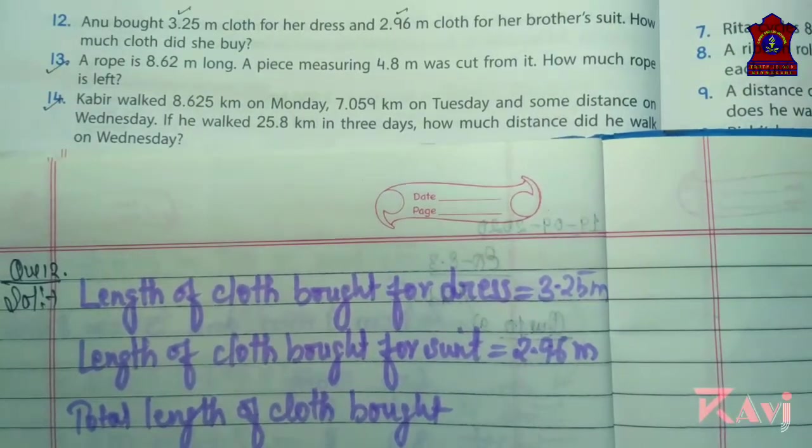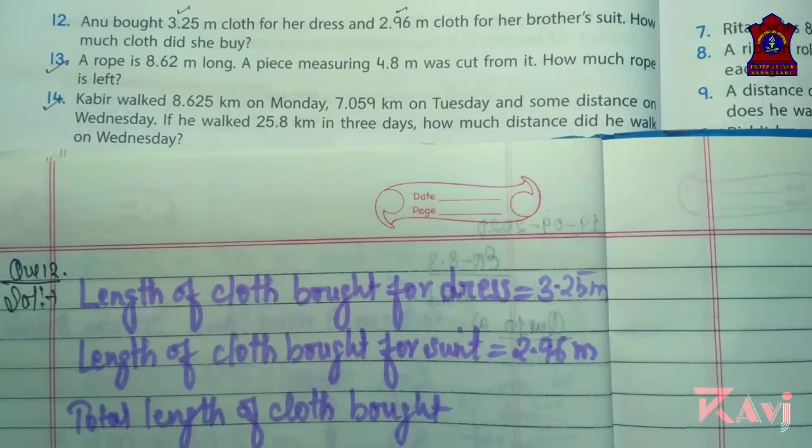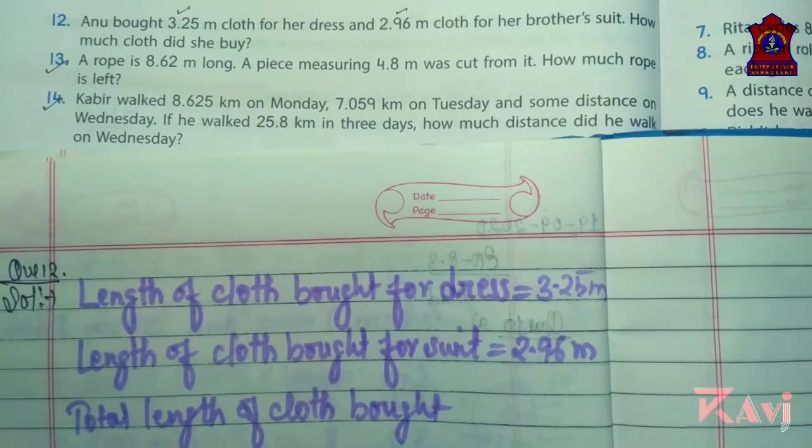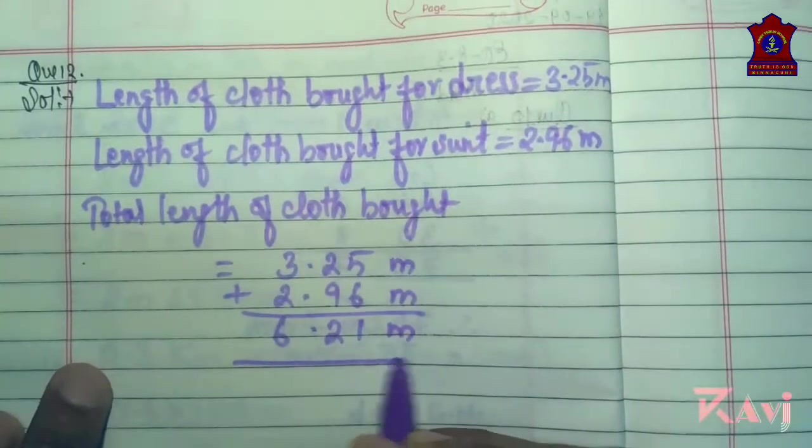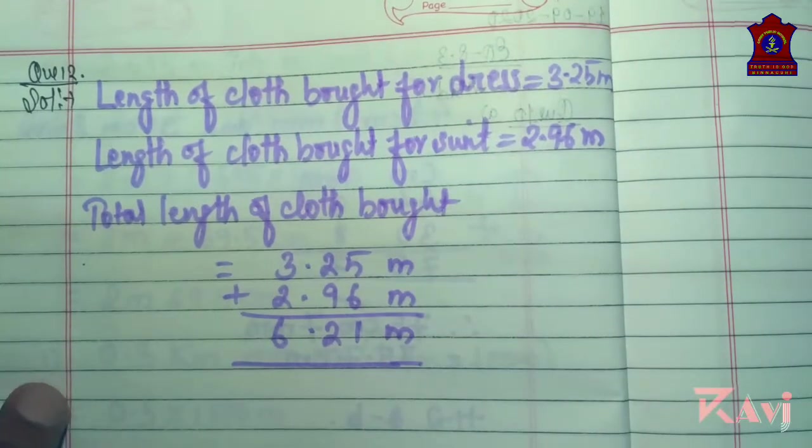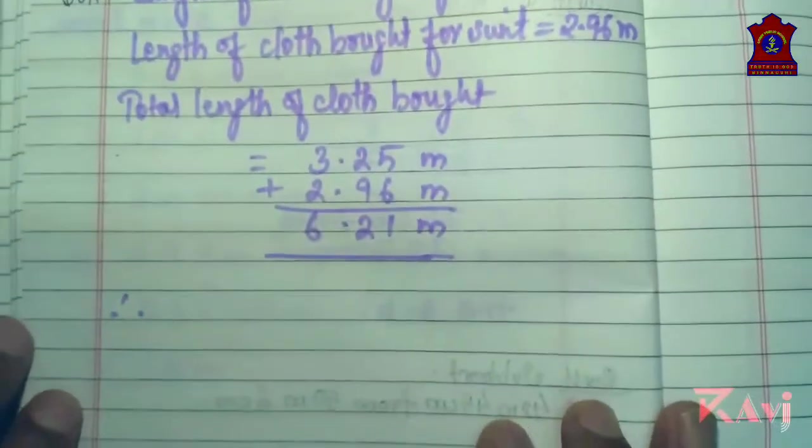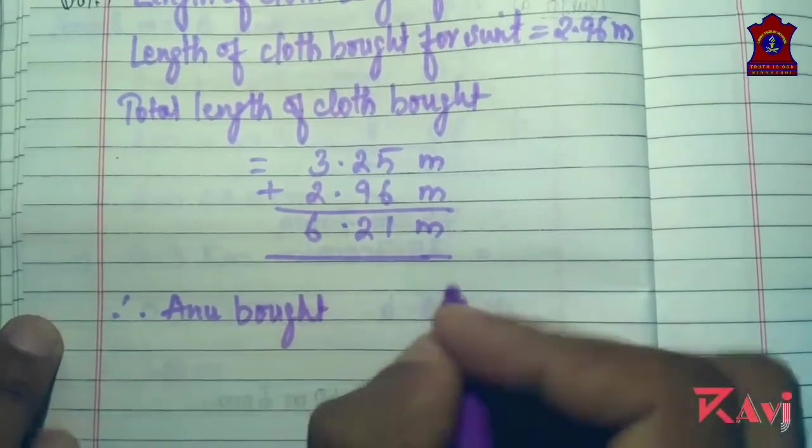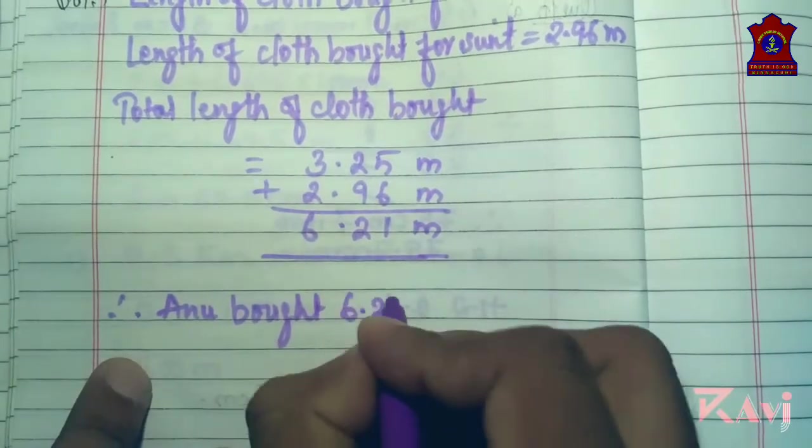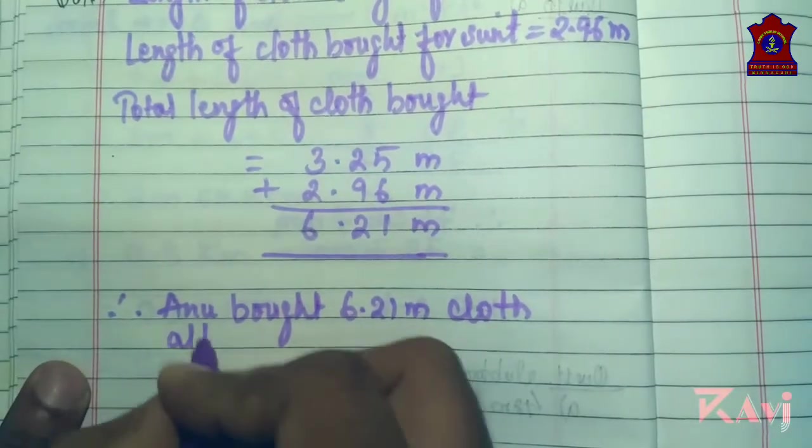To get total, what you need to do, we will be adding. So 3.25 plus 2.96 meters. We can add. 6 and 5 is 11, 1 goes here. 9 and 2 is 11, 1 goes here. 3 plus 2 is 5, and 6. So the total length of cloth bought is 6.21 meters. Therefore Anu bought 6.21 meters cloth altogether.